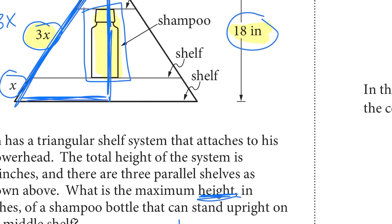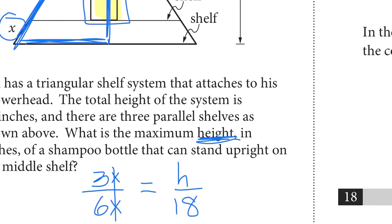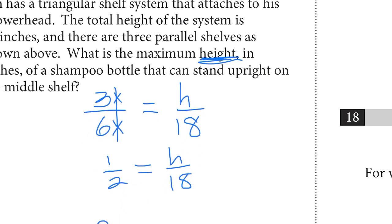It's basically half of your total. And that's going to equal our height, we'll call that h over 18 for that vertical height. So when we go to simplify, this reduces to one half.